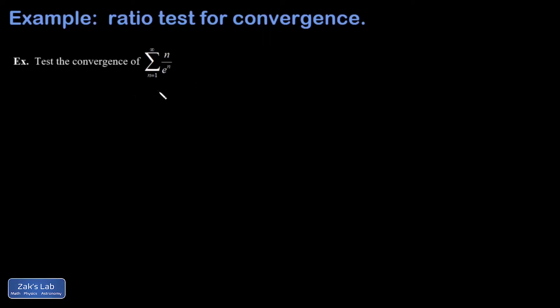In this video we're applying the ratio test to this series to find out whether or not it's convergent. In the ratio test, you investigate the large n limit of the absolute value of the next term in the sequence divided by the previous term—so the n plus 1 term divided by the n term.